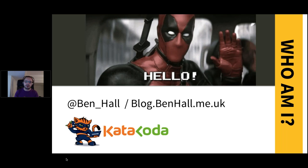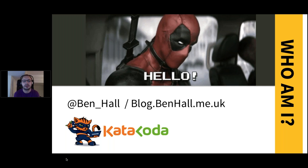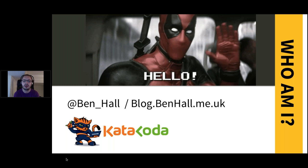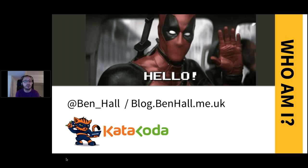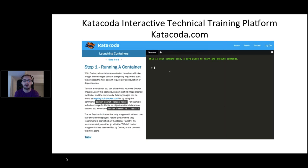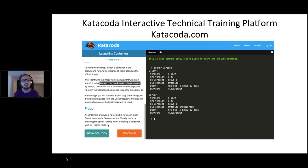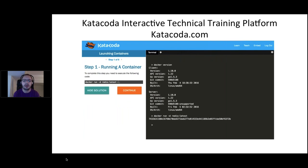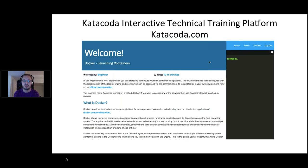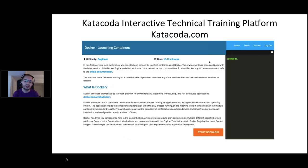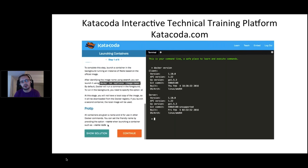My name is Ben Hall — you can reach me at Twitter @ben_hall and my blog is blog.benhall.me.uk. I'm the founder of Katacoda, an interactive learning platform for software developers offering interactive tutorials directly in the browser, all available for free with everything pre-configured. We have a range of content from Docker to Kubernetes to DC/OS and OpenShift, all available at katacoda.com.